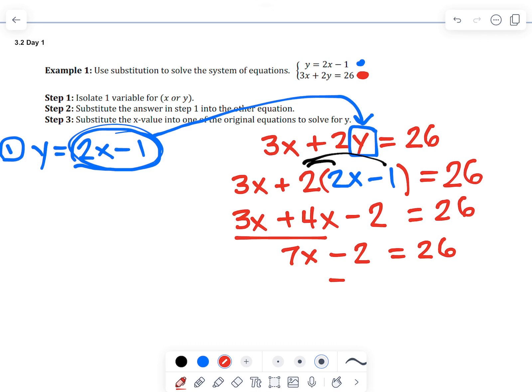And then we undo the minus 2 by adding 2 to both sides. So 7x equals 28. Then we divide both sides by 7. And we get x equals 4. So that was step 2. That'll always be the longest step.